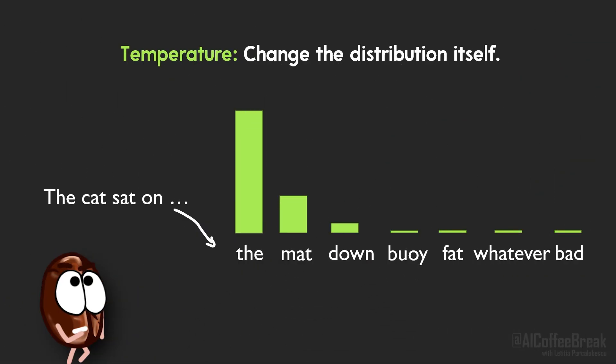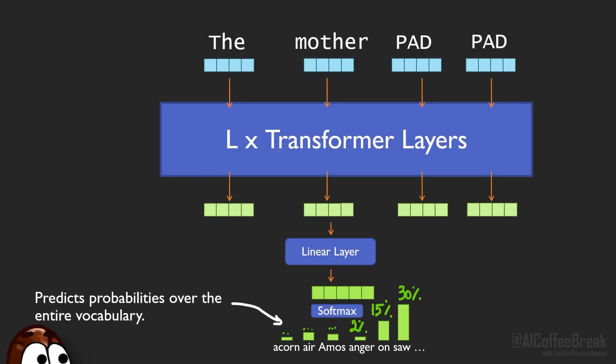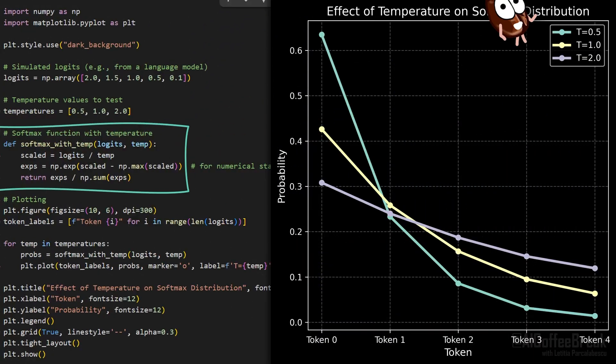While these existing strategies use the probability distribution as is, it's now time to talk about temperature sampling. It's a simple but powerful parameter that changes the shape of the probability distribution itself. It only affects the softmax step, where the model's raw scores, called logits, are turned into probabilities between 0 and 1. The temperature T is applied directly in the softmax formula. When T equals 1, you get the standard softmax.